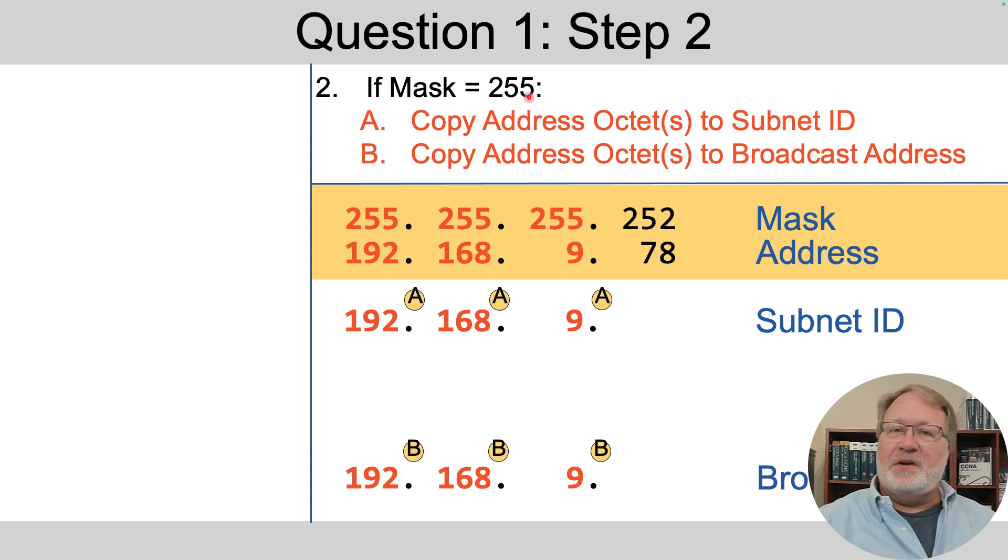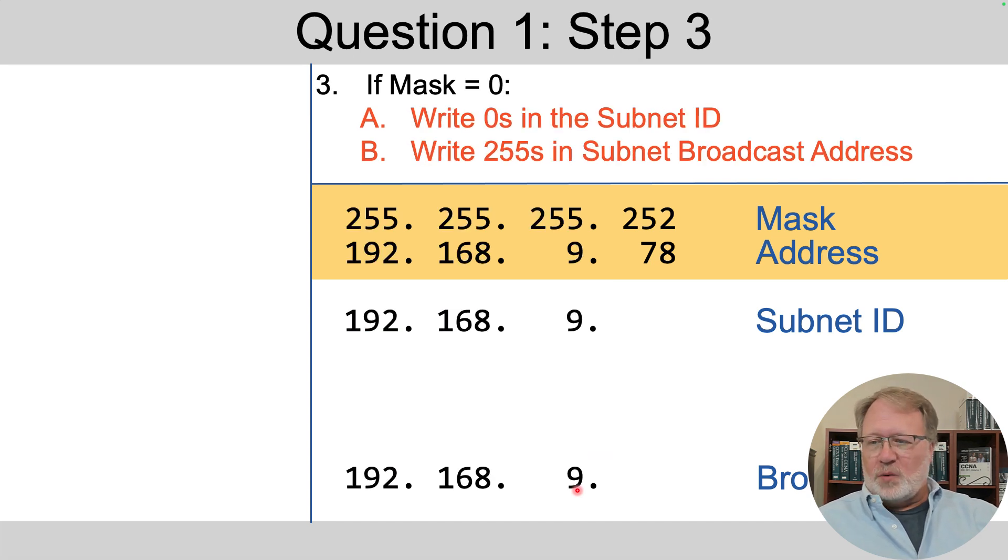Then if the mask is 255, we work by octet. So in this case, we've got three octets of 255. So in those octets, we copy the address octets to both the subnet ID and to the subnet broadcast address. So these three octets match the subnet ID and subnet broadcast address. Then we've just got one octet, the fourth octet, left to work with.